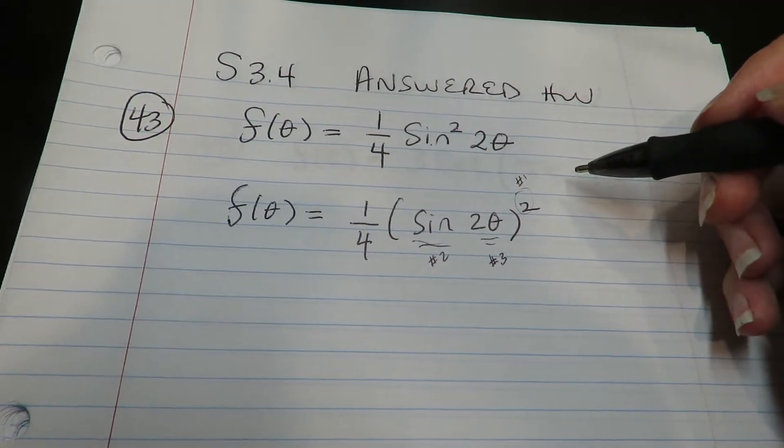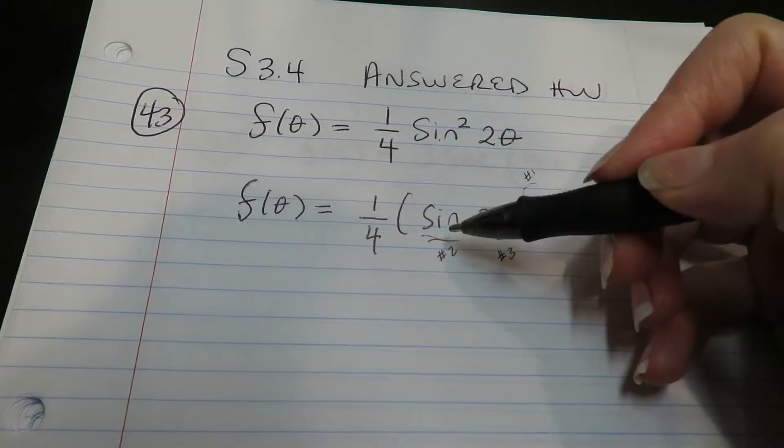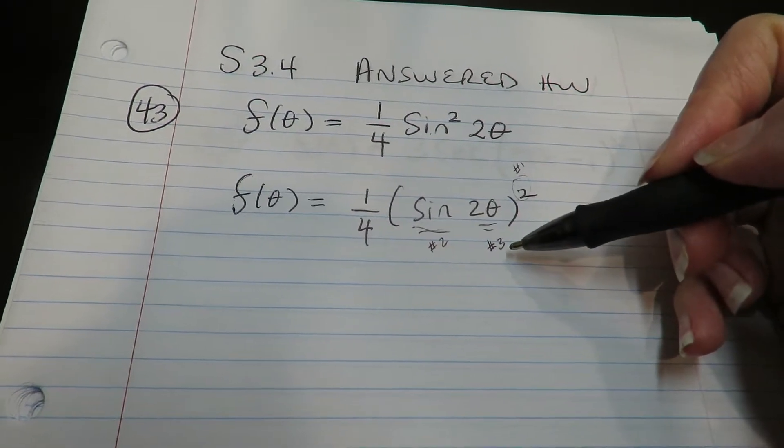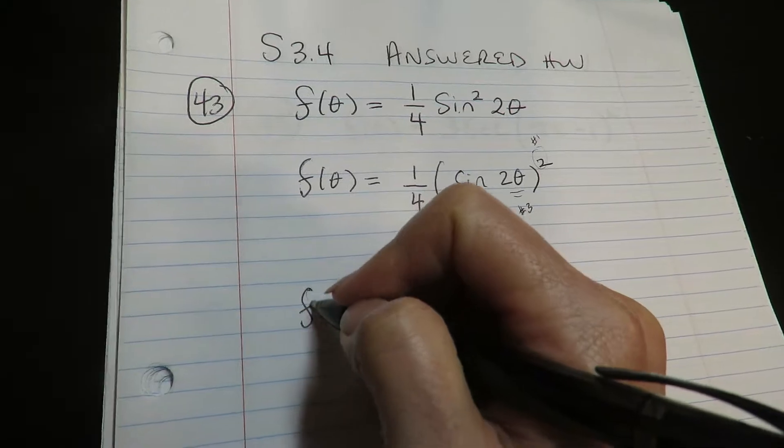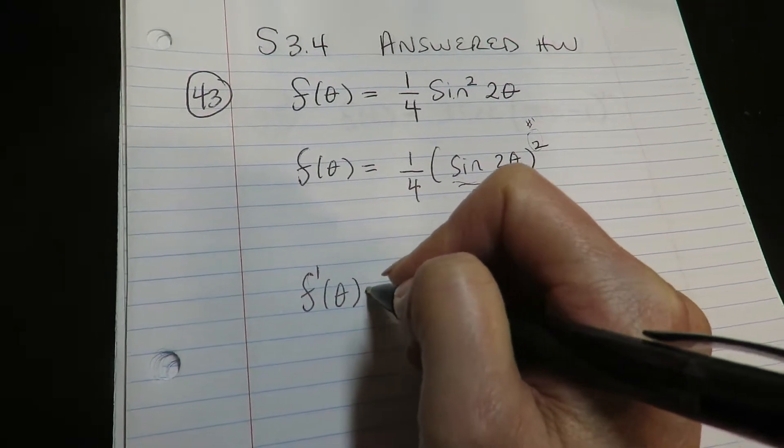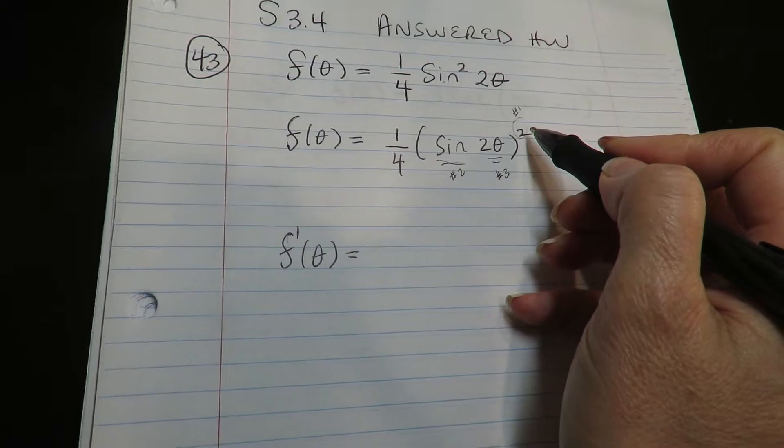So when you see me do the chain rule, I'll do this first, then this guy, and then this guy. All right, let's give it a go. Strictly chain rule. Derivative of one layer, keeping everybody else the same.